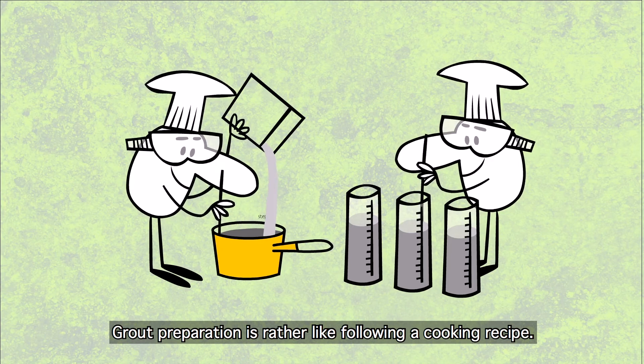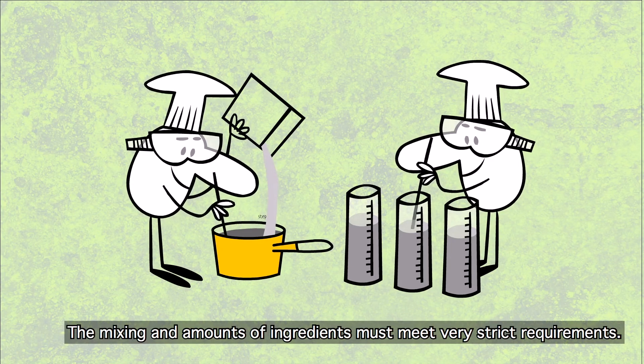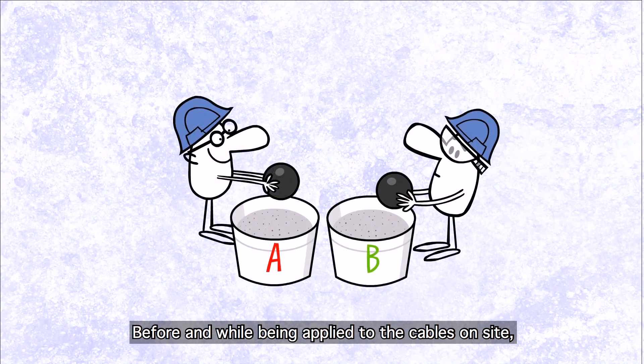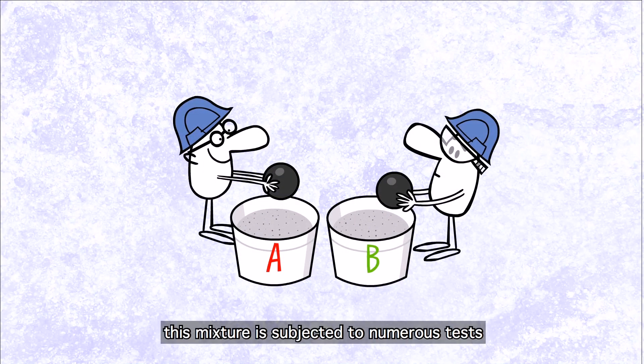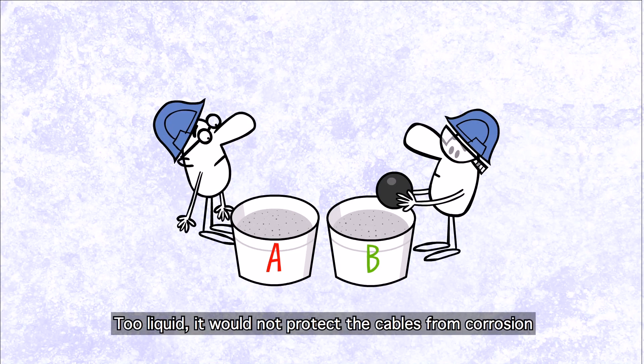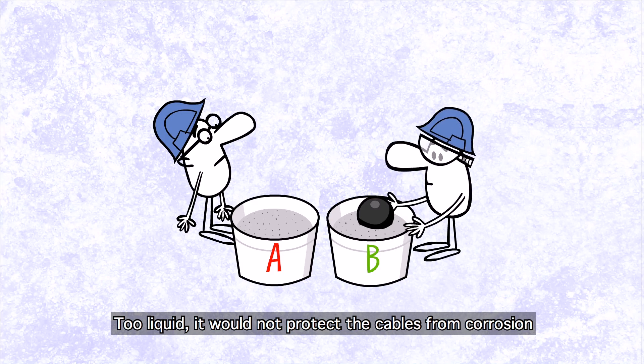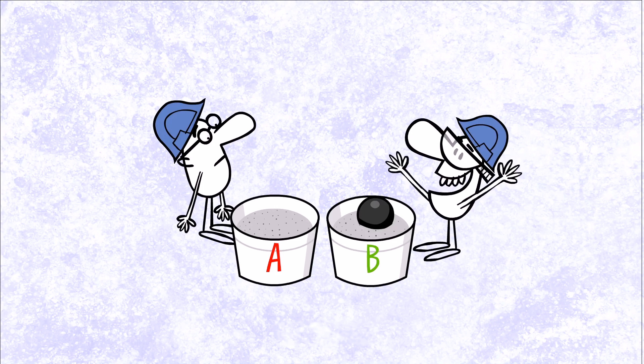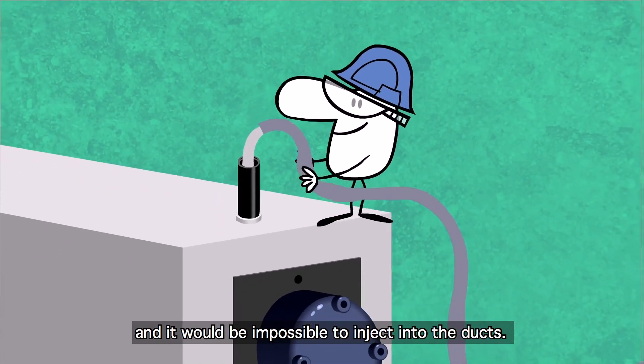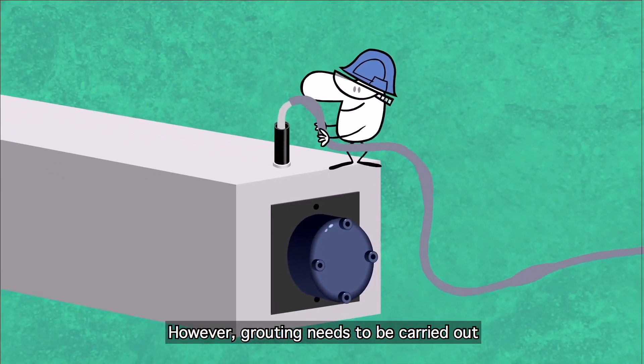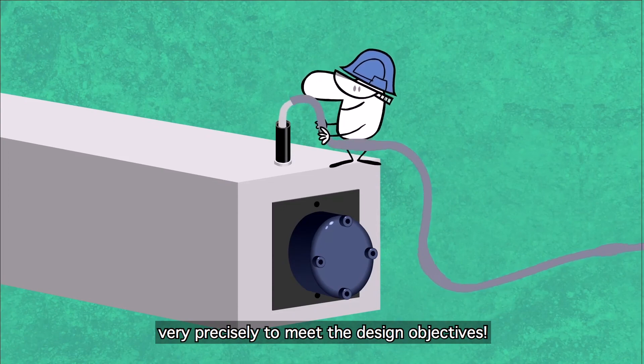Grout preparation is rather like following a cooking recipe. The mixing and amounts of ingredients must meet very strict requirements. Before and while being applied to the cables on site, this mixture is subjected to numerous tests, because the stakes are high. Too liquid, it would not protect the cables from corrosion and would jeopardize the solidity of the structure. Too viscous, and it would be impossible to inject into the ducts. This might sound easy. However, grouting needs to be carried out very precisely to meet the design objectives.